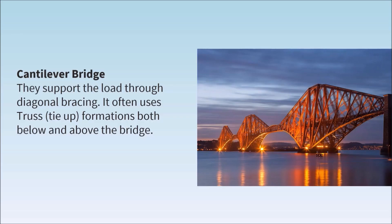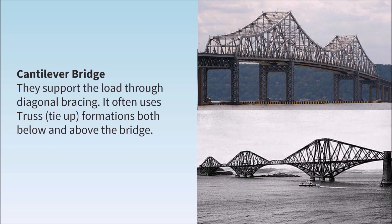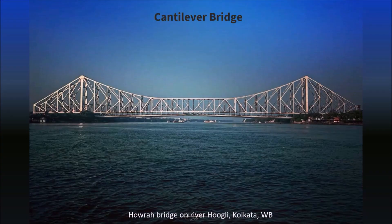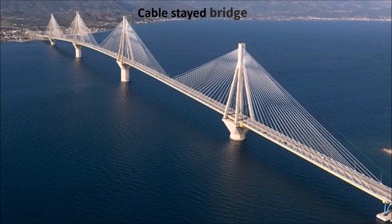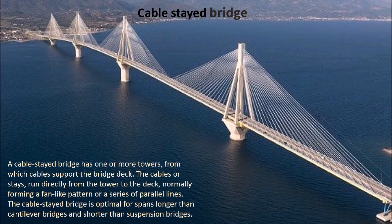Next, cantilever bridge — they support the load through diagonal bracing. It often uses truss and tie-up formations, both below and above the bridge. A cable-stay bridge has towers from which cables support the bridge deck. The cables run directly from the tower to the deck, forming a fan-like pattern. These bridges are suitable for spans longer than cantilever bridges and shorter than suspension bridges.